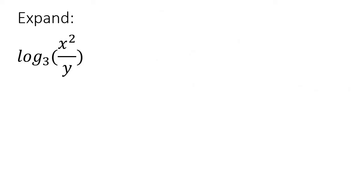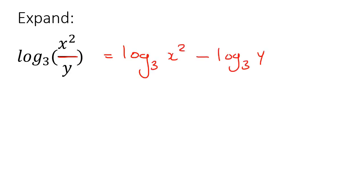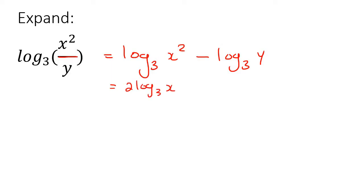Here's another example. We are dividing, so that means minus. So we get log₃(x²) minus log₃(y). Now notice that log₃(x²) has three parts, so the 2 is going to jump to the front, and it becomes 2·log₃(x) minus log₃(y).